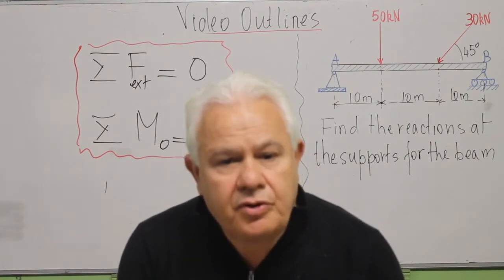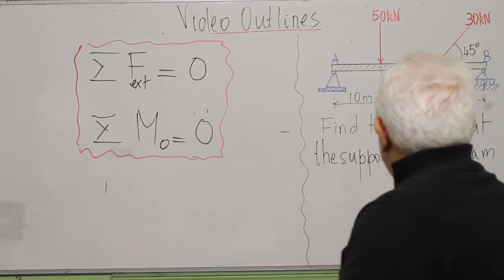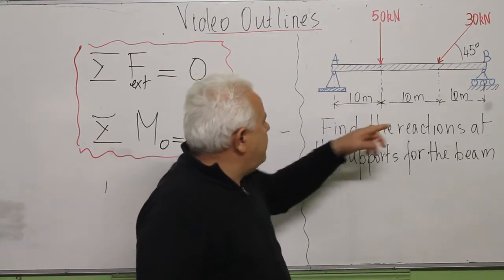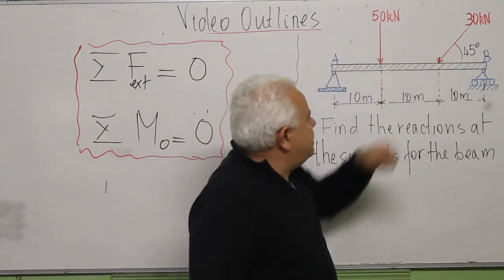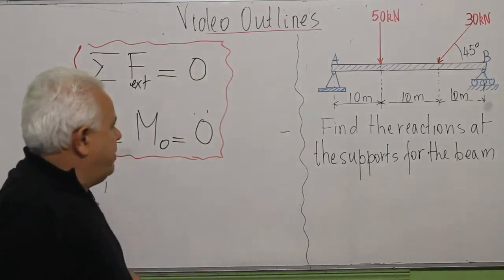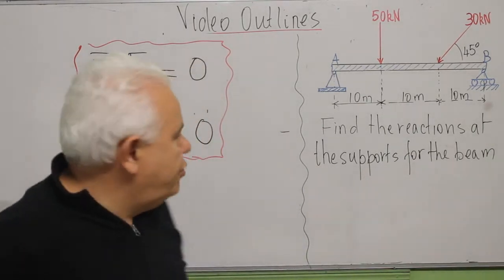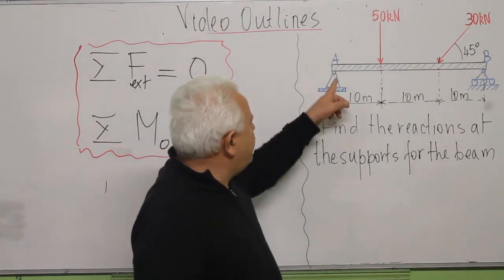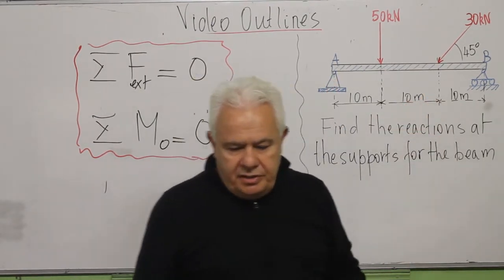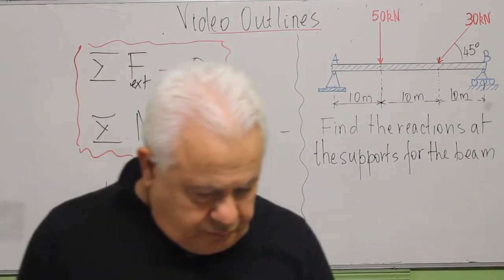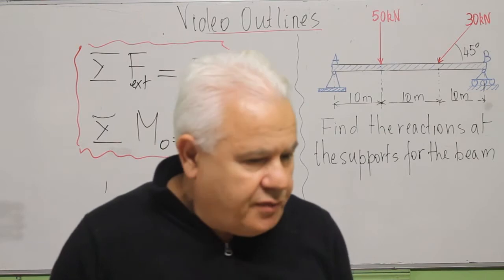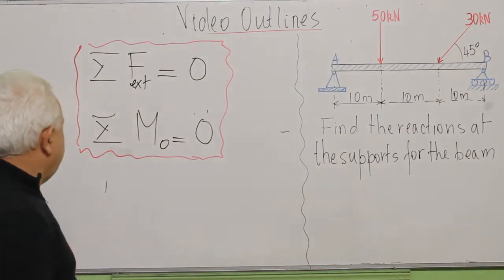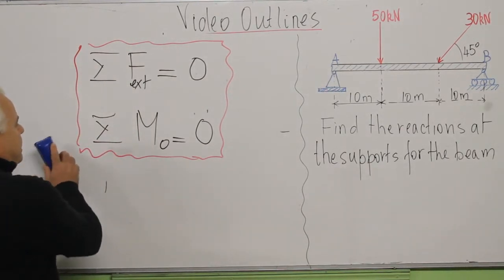These two conditions are necessary and sufficient for solving the problems. On the board I have an example: a beam on which two forces are applied. The question is to find the reactions at the supports — that means the reaction at A and the reaction at B. We solve this using the two conditions: Sigma of the forces and Sigma of the moment equal to zero.